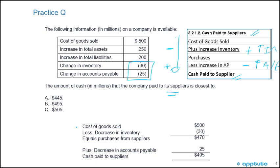So the formula becomes: cost of goods sold minus the decrease in inventory equals purchases from suppliers. Then accounts payable went down, so it's plus the decrease in accounts payable, and that equals cash to suppliers. So 500 minus 30 equals 470, plus 25 equals 495. The correct answer is B.